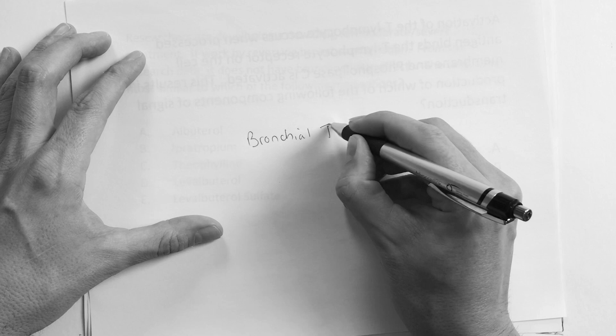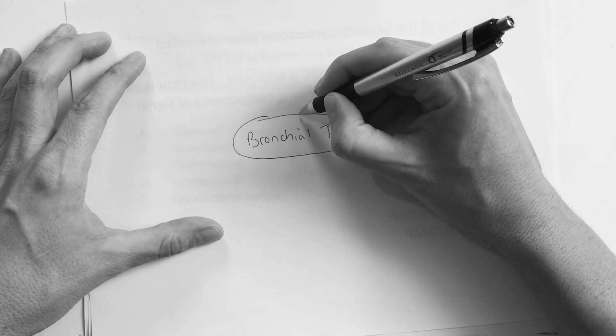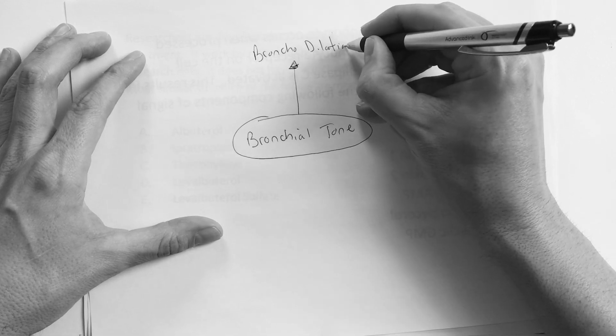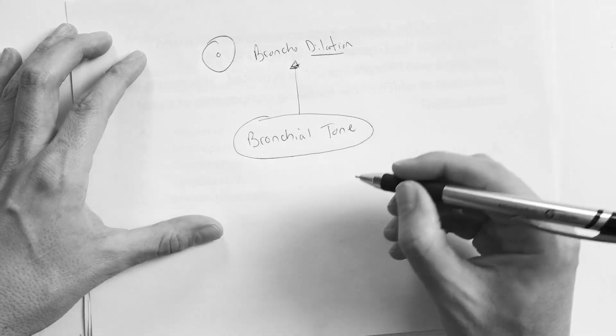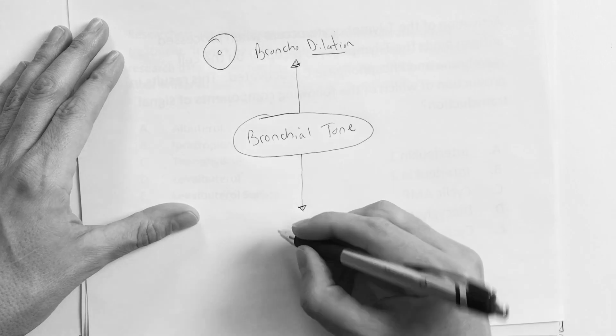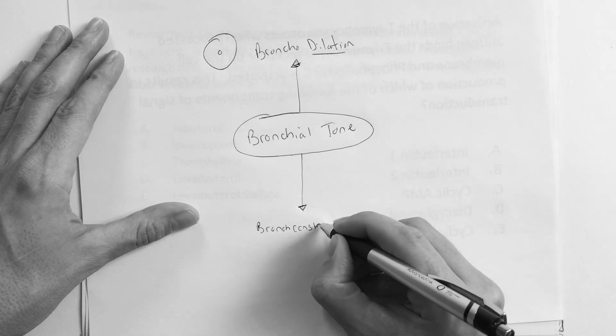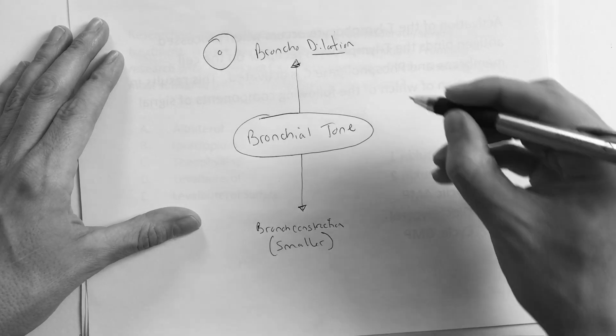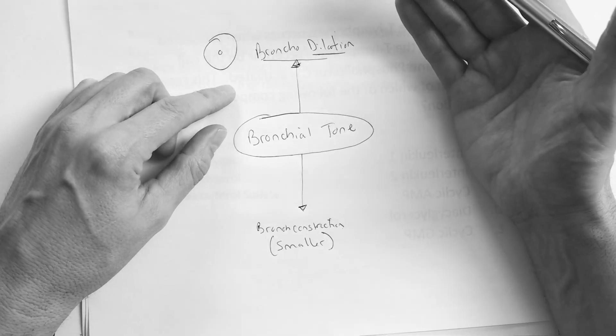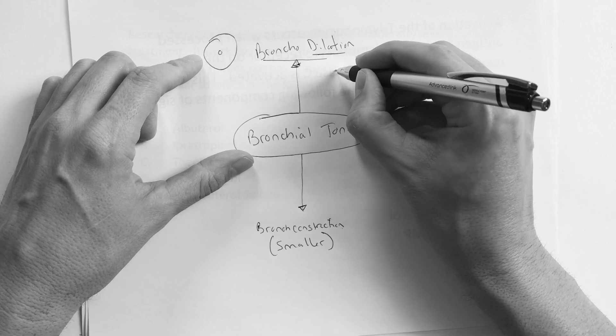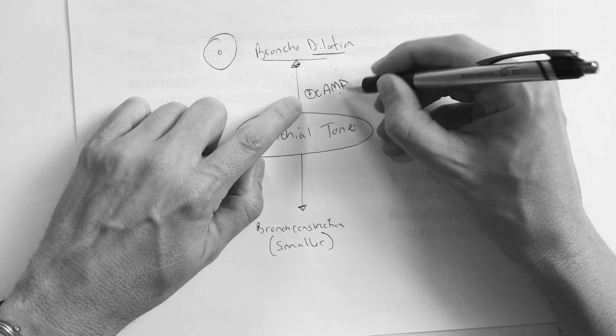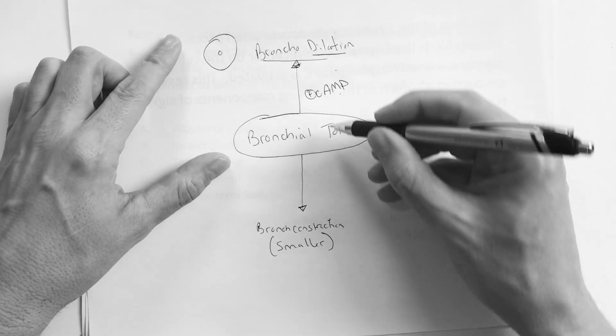Let's go through it. Bronchial tone - we're in the lung. If you go this way, it dilates, they're going to call it bronchodilation. It gets bigger. If it goes this way, and this is just how God made us, you have the bronchial tone and it can either get bigger, dilate, or it can bronchoconstrict, it's smaller. Dilation or constriction, it's going to go one or the other.